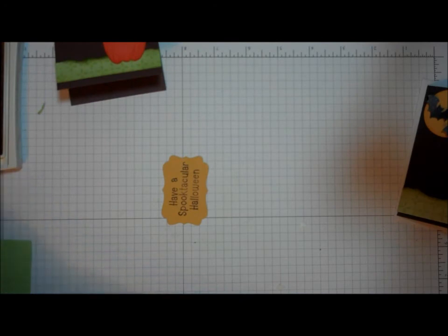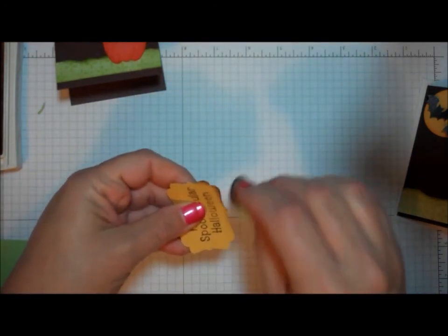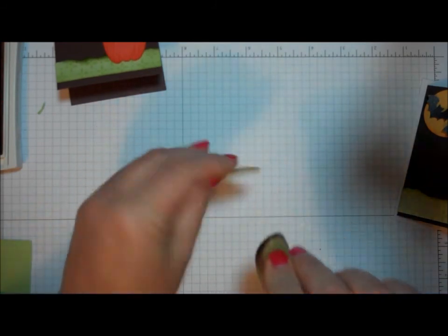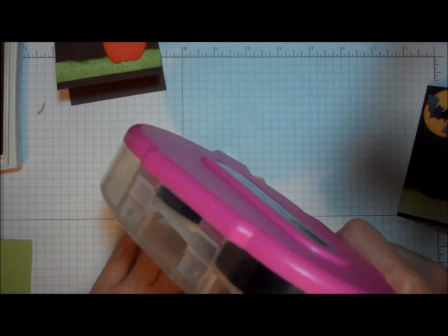I'm going to bring back that sponge with the chocolate chip ink on it, and I'm going to hit the edges of this. There we go. Lay that down. I'm going to apply some adhesive to the back.